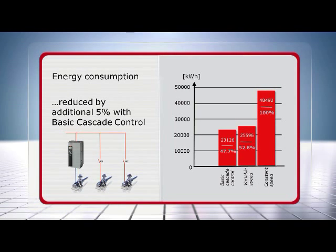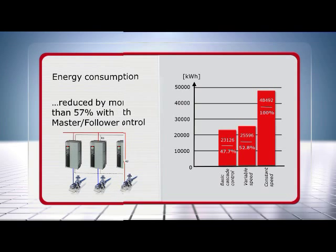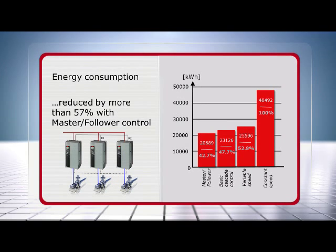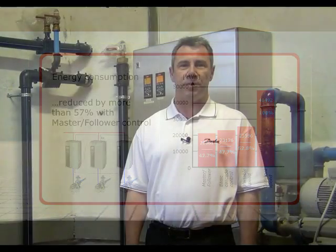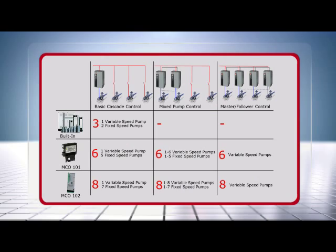If the load is shared between a variable speed pump and fixed speed pumps, about 5% additional savings can be obtained. And by controlling the speed of all pumps in a master follower configuration in the same application, the reduction in energy consumption is more than 57%. Danfoss offers very flexible cascade control solutions. The cascade controller of the VLT AquaDrive supports basic cascade control, mixed pump control and master follower.